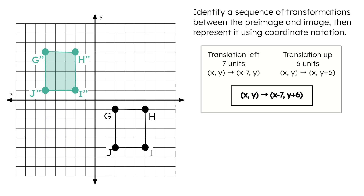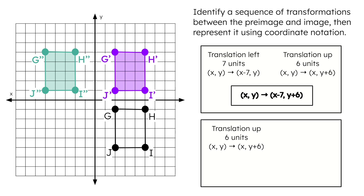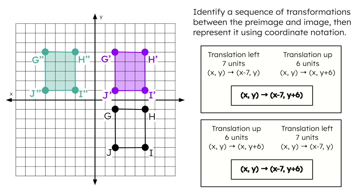What's another possible sequence of transformations that could work here? The pre-image could have translated up 6 units first, which is (x, y + 6), followed by a translation left 7 units, which decreases the x-coordinate by 7. The single coordinate notation describing the entire sequence would be (x − 7, y + 6). The coordinate notations of both sequences are the same!